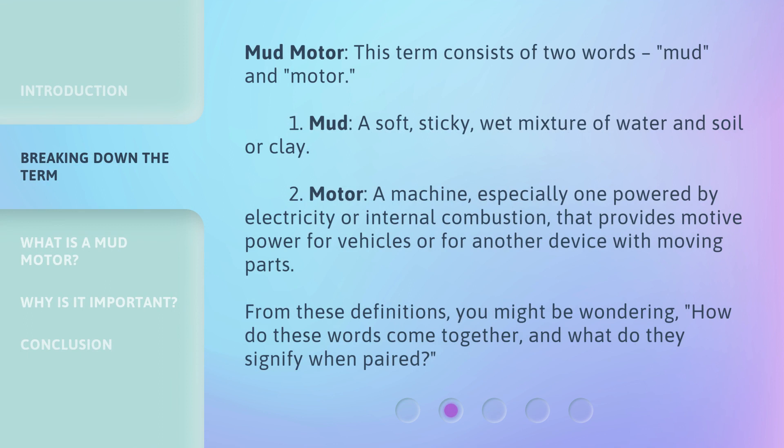Mud motor. This term consists of two words: mud and motor. First, mud — a soft, sticky, wet mixture of water and soil or clay. Second, motor — a machine, especially one powered by electricity or internal combustion, that provides motive power for vehicles or for another device with moving parts.